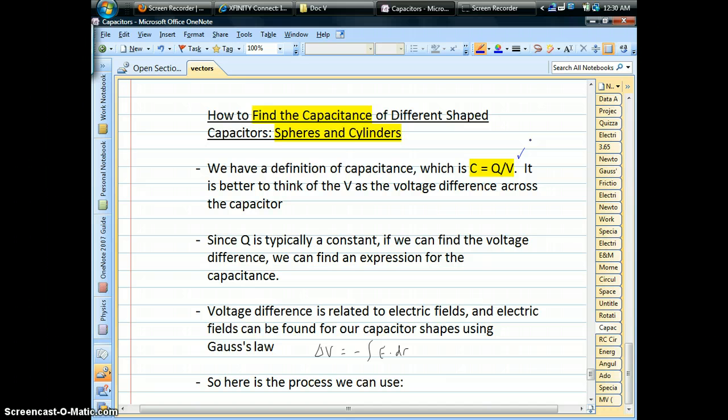we know how to find and define capacitance. That's the charge being held divided by the voltage. Now the voltage is actually that V represents the voltage difference across the capacitor. So it's probably more accurate to say capacitance is Q over delta V. That's what we're really talking about.